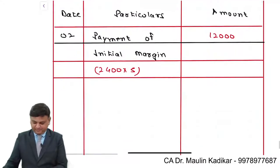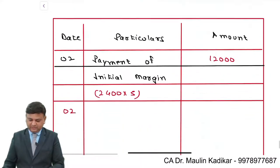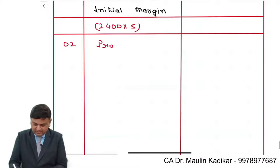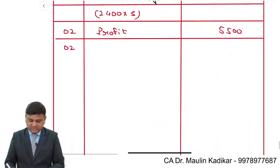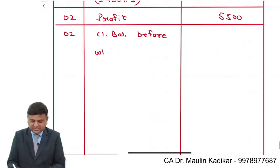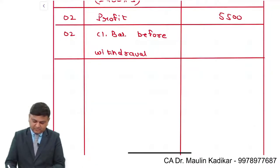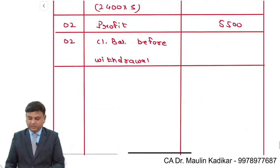So 2400 into 5 comes to 12,000 — that is the payment of the initial margin, with which the account starts. On August 2 itself, there is a profit of 5,500. The closing balance before withdrawal is 17,500. Since the trader withdraws whenever allowed, we note the withdrawal step.